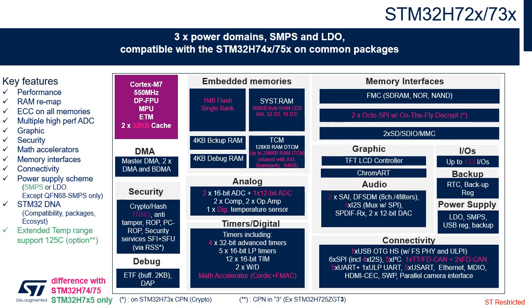Thanks to the shared RAM, the ITCM, accessible at CPU max frequency, can be increased from 64 kilobytes to 128, 192, or 256 kilobytes. Two accelerators have been added.